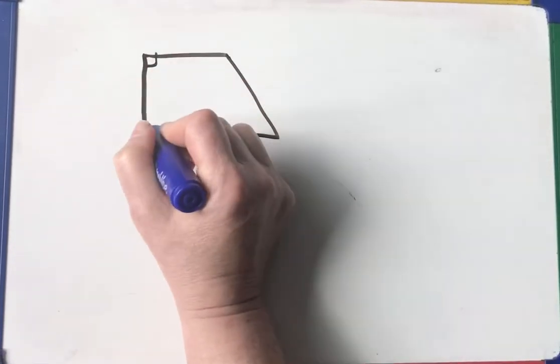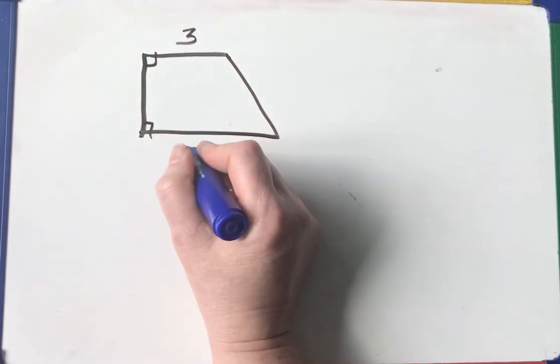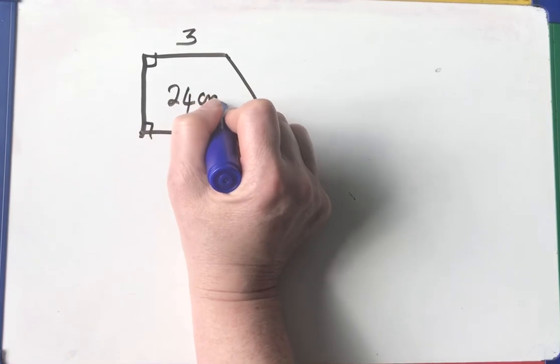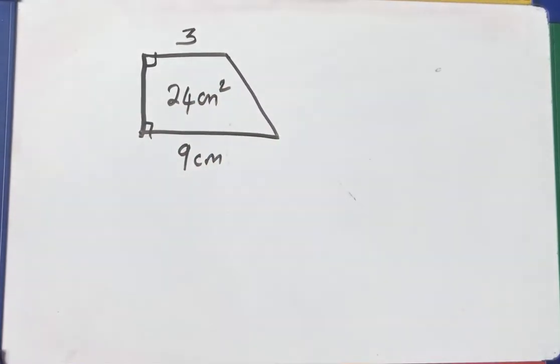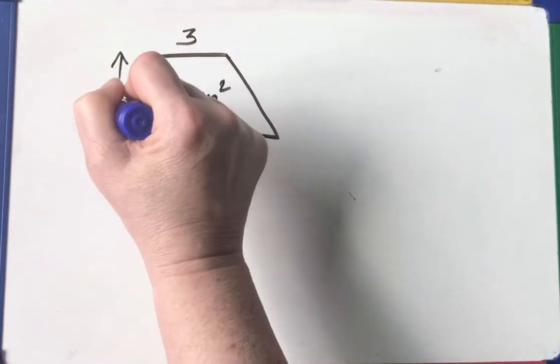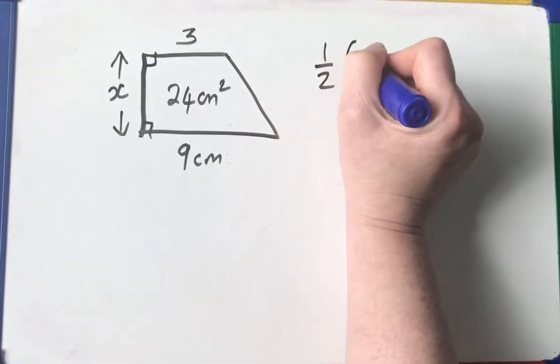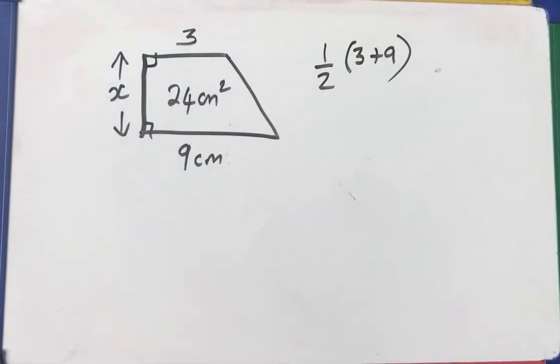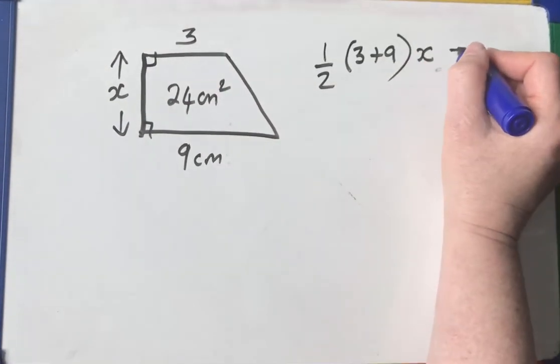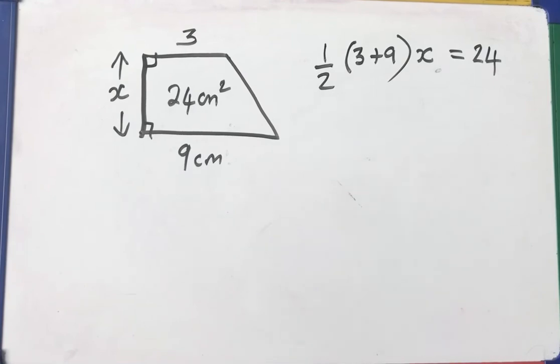So here's a trapezium. Let's have a right trapezium. So two right angles. So the parallel sides are 3 and 9. And I'm going to tell you that the area is 24 centimeters squared. So we're going to calculate this missing height here. So half the sum of the parallel sides times the space between them. That is how we calculate the area of a trapezium.